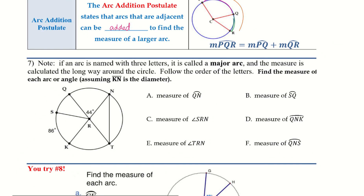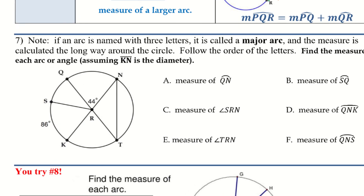Number seven. Note: if an arc is named with three letters, it is called a major arc and the measure is calculated the long way around the circle — follow the order of the letters. Find the measure of each arc angle; assume that KN is the diameter.